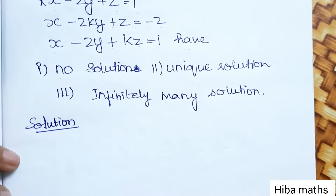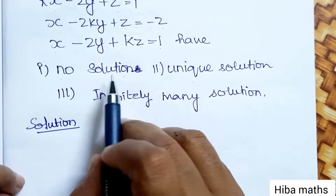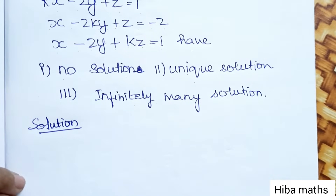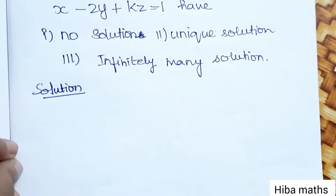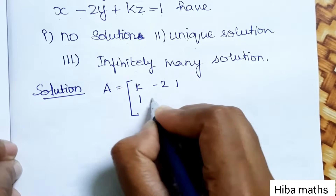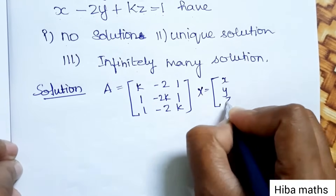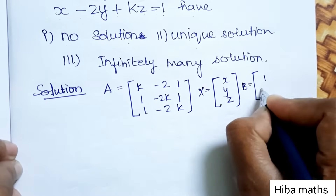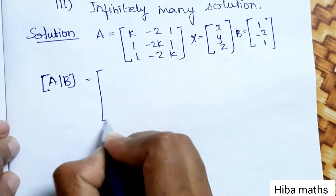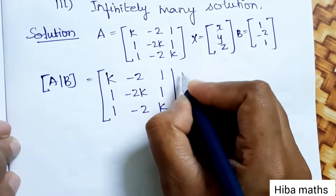So for the equations, we will write in augmented matrix form. The A matrix is [k, -2, 1; 1, -2k, 1; 1, -2, k] and the B matrix is [1; -2; 1]. The augmented matrix [A|B] is k, -2, 1, 1; 1, -2k, 1, -2; 1, -2, k, 1.